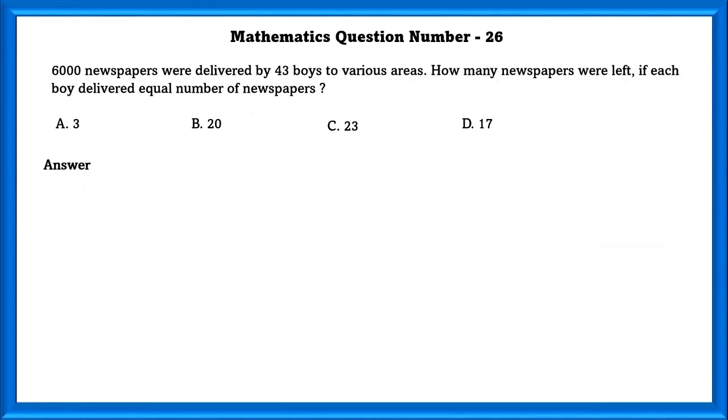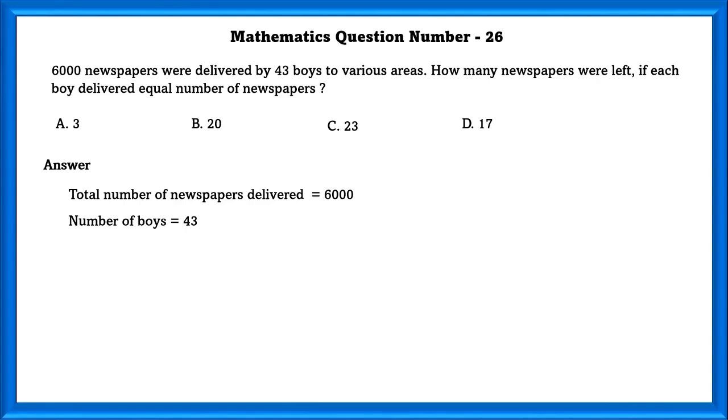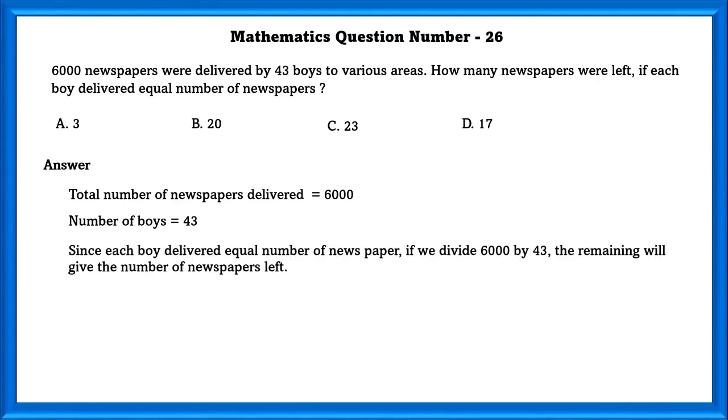Mathematics question number 26. 6000 newspapers were delivered to 43 boys to various areas. How many newspapers were left if each boy delivered equal number of newspapers? Number of newspapers delivered is equal to 6000. Number of boys is equal to 43. Since each boy delivered equal number of newspapers, if we divide 6000 by 43, the remaining will be the number of newspapers that were not delivered. If we divide this, we will get the remainder as 23. So 23 newspapers were left.